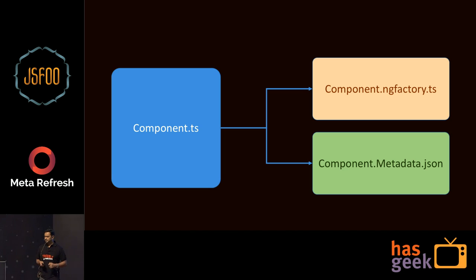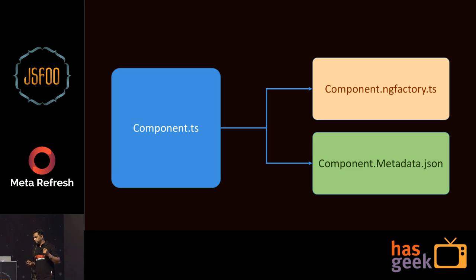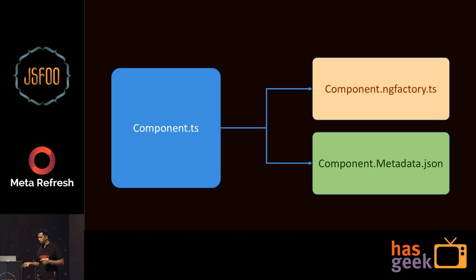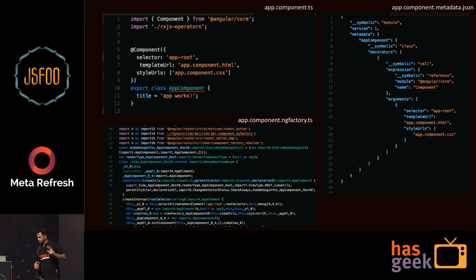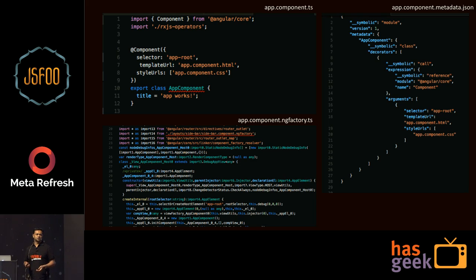When you have a component file and run the ngc compiler, it converts into two files: the NGFactory, which is the compilation of the Angular component — the HTML, CSS, all bundled together as a TypeScript file — and the component.metadata.json, which is information Angular needs for bootstrapping. You only need to worry about the component code you write; the NGFactory and metadata files are automatically generated by the compiler. You write about 20 lines of code and the compiler generates about 110 lines for you.